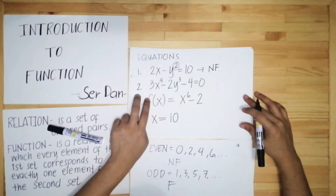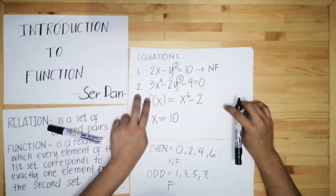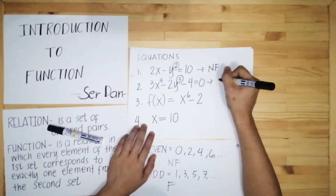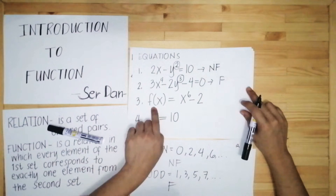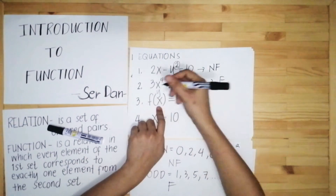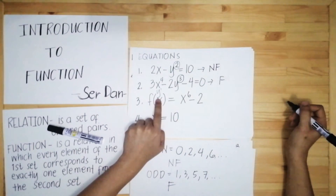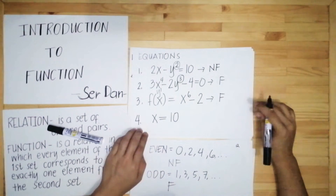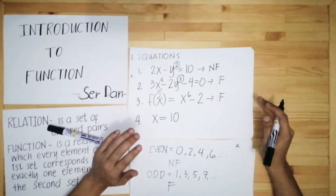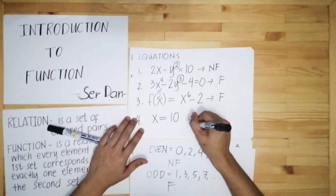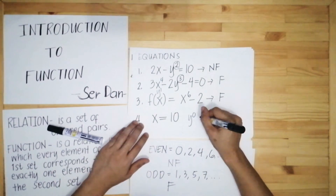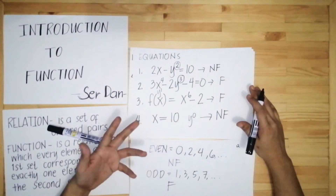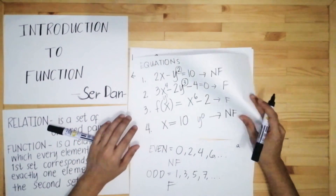For number two, the exponent of y is 3. Only look at y — odd exponents such as 1, 3, 5, 7, etc. mean the equation is a function. So number two is a function. Also, if you see f(x), that is equivalent to y with an exponent of 1, which is odd, so it is also a function. If you see an equation like x = 10 with no y present, that means y = 0, and it is not a function.